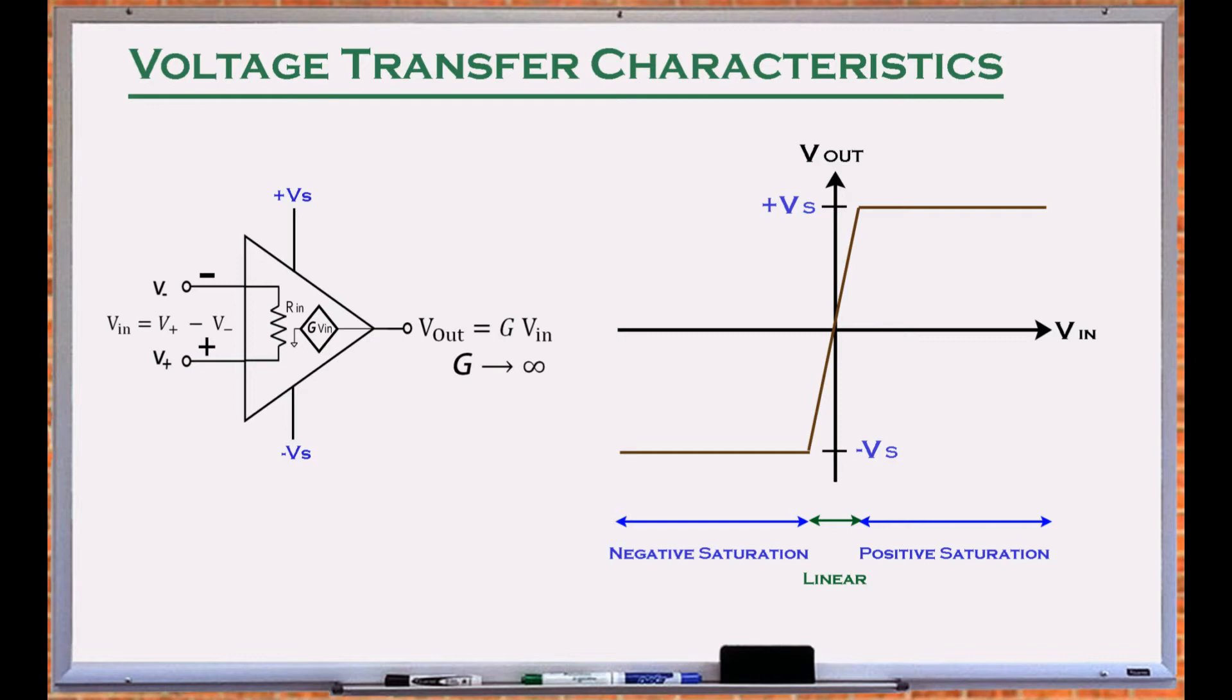Since the output of an amplifier is much larger than the voltage at its input terminals, small input levels can saturate it. The linear region lies between the two saturation regions. In this region the output equals the input multiplied by the open-loop gain.